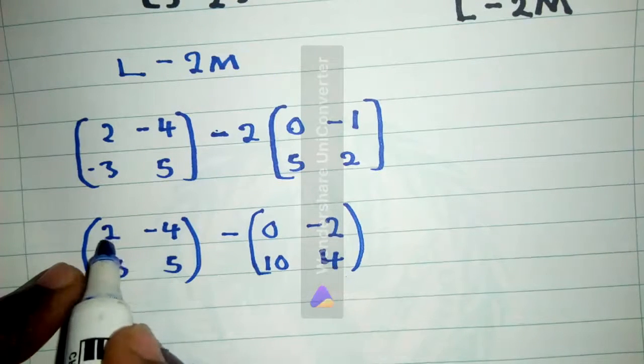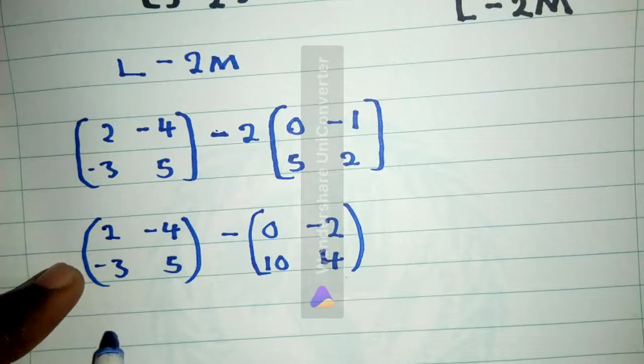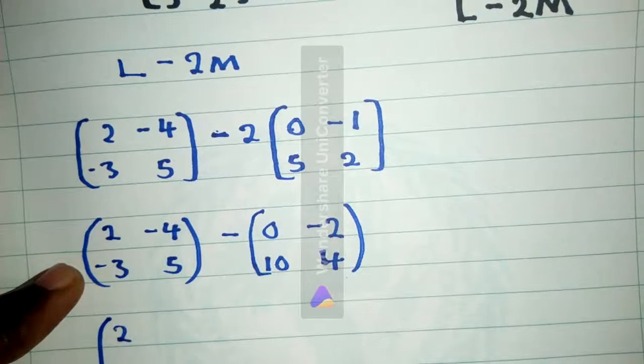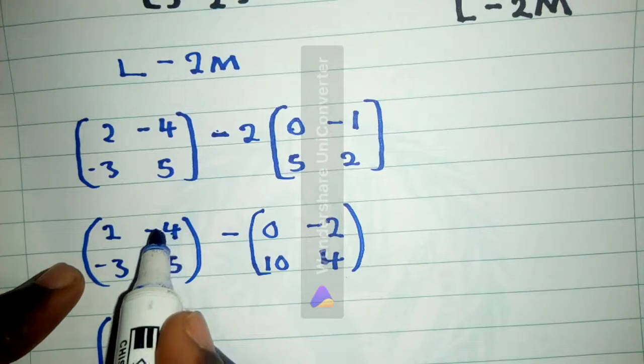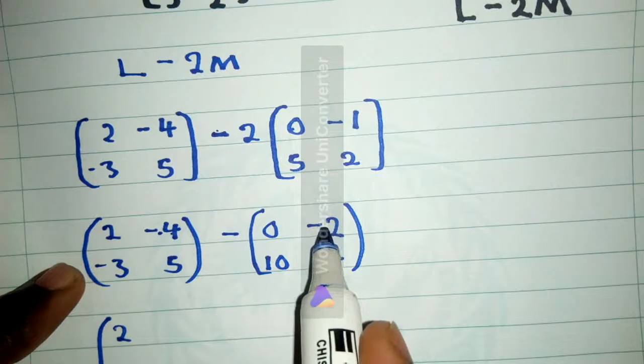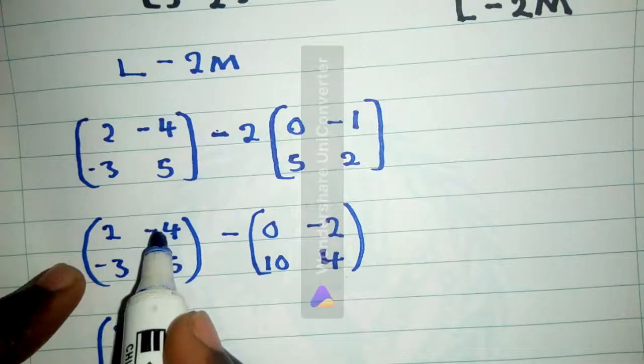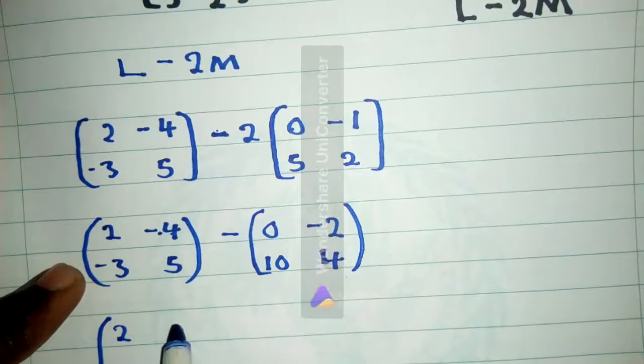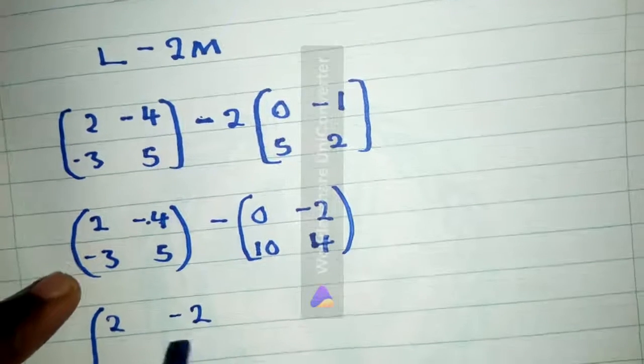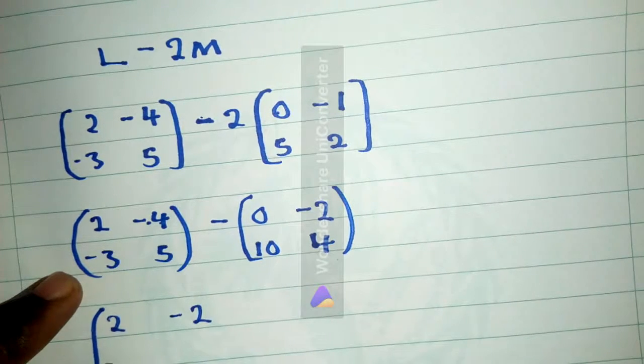So start: 2 minus 0 is 2. Then negative 4 minus negative 2. Negative and negative is positive, so it's negative 4 plus 2, which will be negative 2. Then negative 3 minus 10 will be negative 13. And 5 minus 4 will be 1.